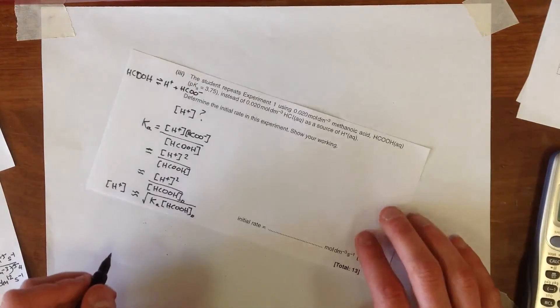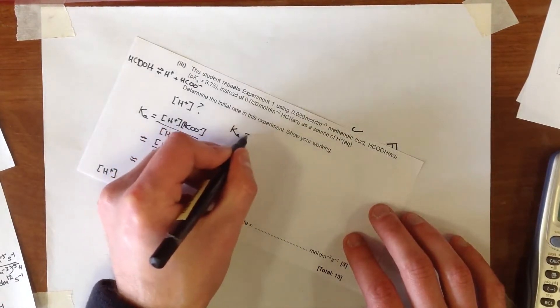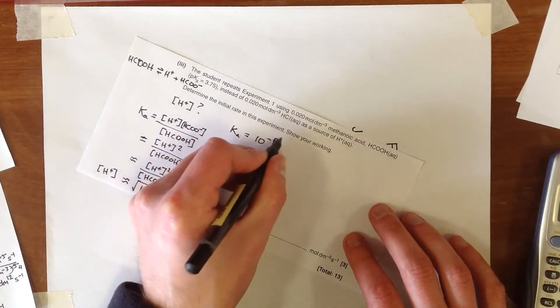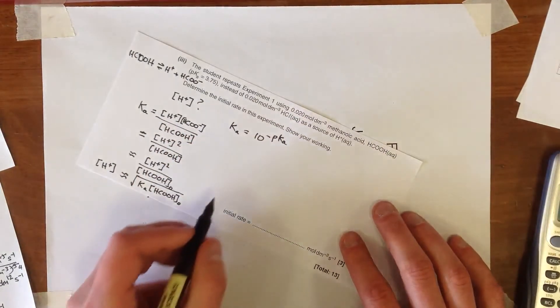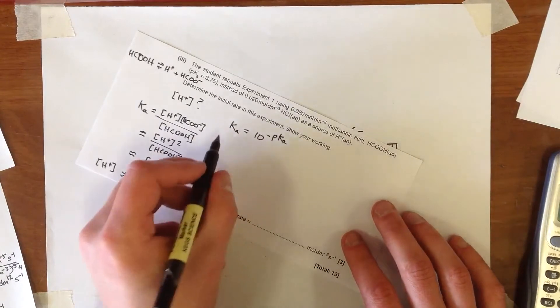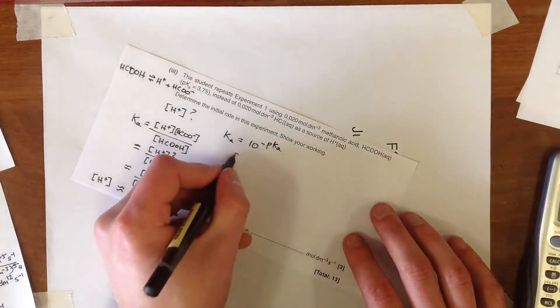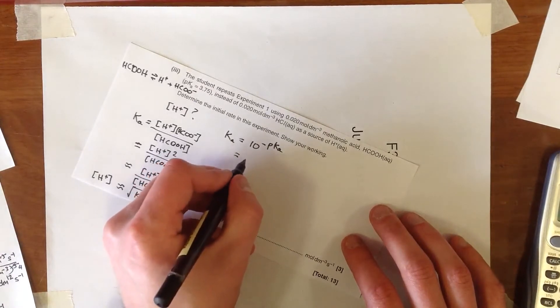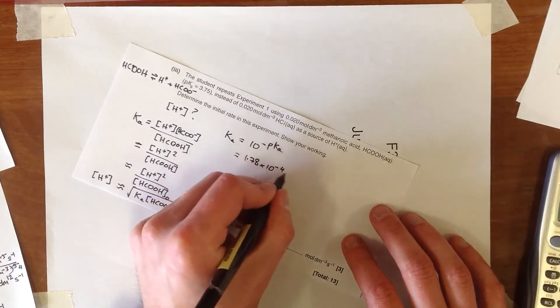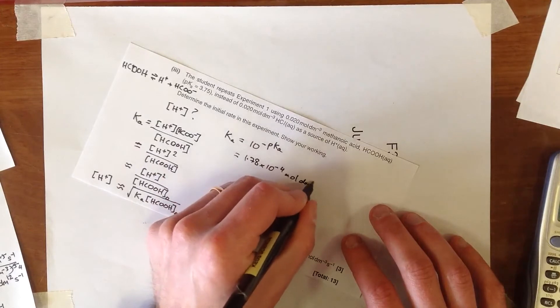Now, we need to work out what the actual Ka of this acid is, and we can say that that is just using this equation here, where Ka is 10 to the minus pKa, because, remember, the pKa is the minus the log of base 10 of Ka. And so when we work that through, we find that the Ka of the acid is 1.78 times 10 to the minus 4 moles per decimetre cubed.